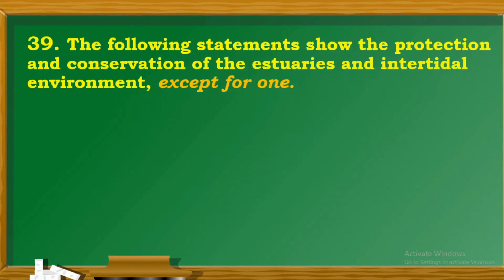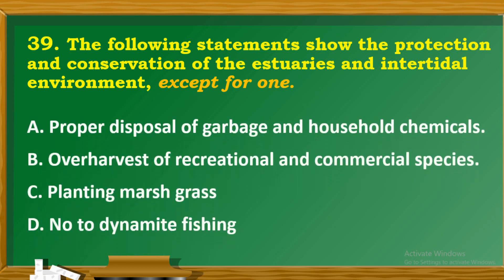Question 39: The following statements show the protection and conservation of the estuaries and intertidal environment except for one. A. Proper disposal of garbage and household chemicals. B. Over-harvest of recreational and commercial species. C. Planting marsh grass. D. Dynamite fishing.